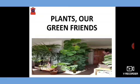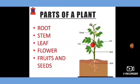Then I told you that there are 5 types of plants: trees, shrubs, herbs, climbers and creepers. After that I introduced that there are different parts of a plant, and today we are going to discuss different parts of a plant one by one.